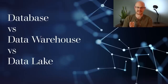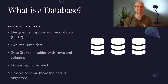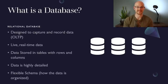Let's start with a database. When someone says a database, typically they're referring to a relational database. A relational database can capture and store data via an OLTP process, which stands for online transactional processing. So when a company completes a transaction and sells an item, it'll record that within a database, and that data has the ability to be live, real-time data. Data in a database is going to be stored in tables with columns and rows, and it's going to be highly detailed. Databases also have a really flexible schema, which means you can go in and change things as you go to make it work for what you need.